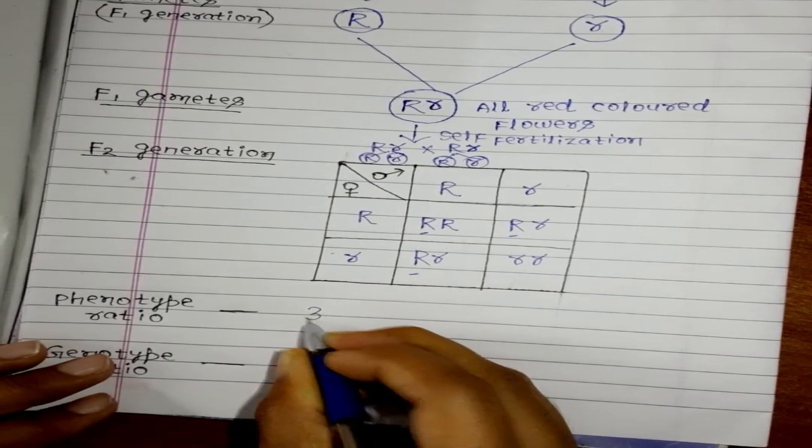So by this we can conclude, what is the phenotypic ratio? Phenotypic ratio means which we can see easily. So which is dominant here? Capital R, capital R, capital R. So that is 3 ratio 1.